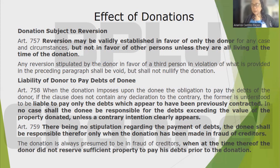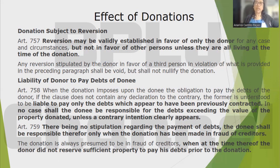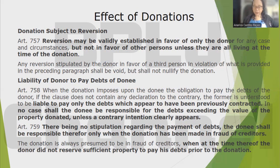With respect to donation subject to the obligation to pay the debts of the donor, the donee is understood to be liable only for debts which appear to have been previously contracted, and in no case shall the donee be responsible for debts exceeding the value of the property donated unless a contrary intention clearly appears. In the absence of stipulation, the donee shall be responsible for debts only when the donation was made in fraud of creditors — it will be presumed to be in fraud of creditors when at the time of the donation the donor did not reserve sufficient property to pay his debts.